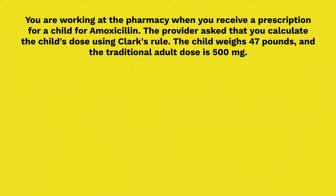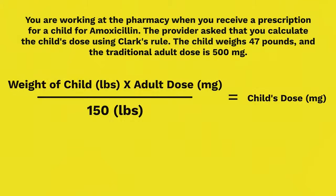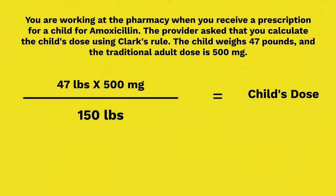Let's try a problem. You're working at the pharmacy when you receive a prescription for a child for amoxicillin. The provider asks that you calculate the child's dose using Clark's Rule. The child weighs 47 pounds and the traditional adult dose is 500 milligrams. Referencing the original equation, we need the weight of the child and the adult dose, both of which the question gives us. We substitute in our values to get 47 pounds times 500 milligrams divided by 150 pounds.